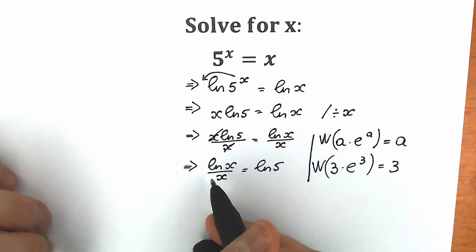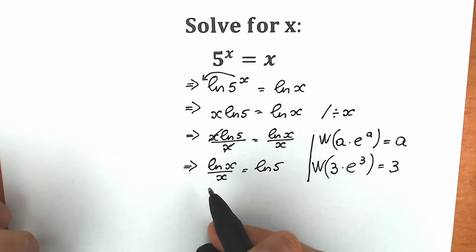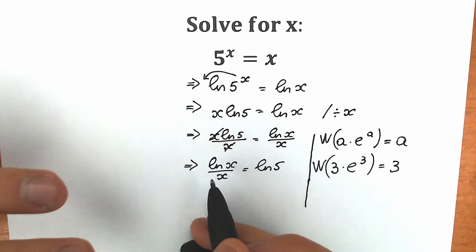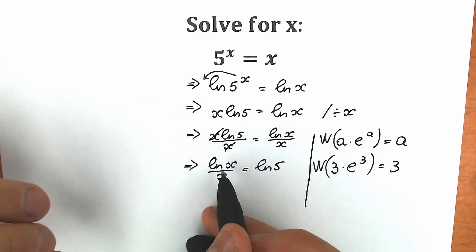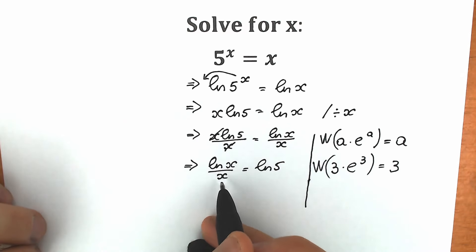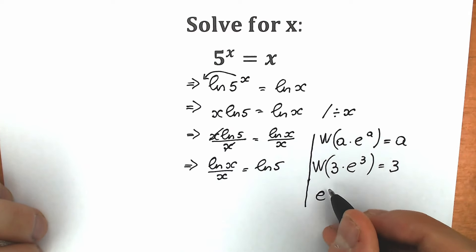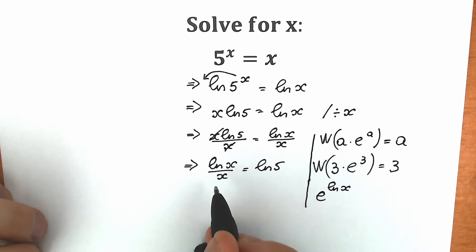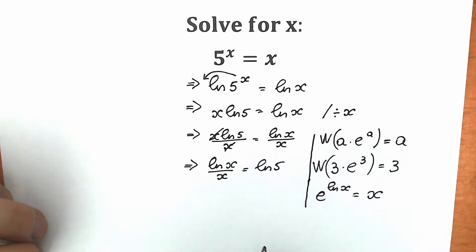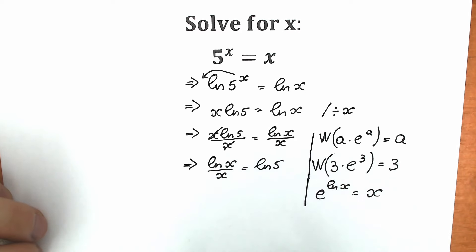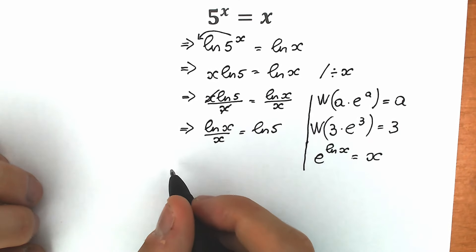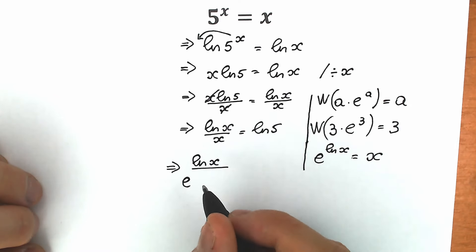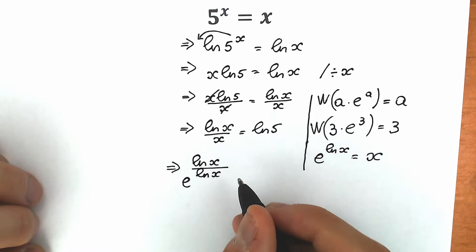On the left side we don't have e — we have a fraction. So we need to create that expression. Natural log x is hard to express in terms of e directly, but x can be written as e to the power natural log x. So instead of x in the denominator, let's write e to the power natural log x. As a result, we have natural log x divided by e to the power natural log x equal to natural log 5.